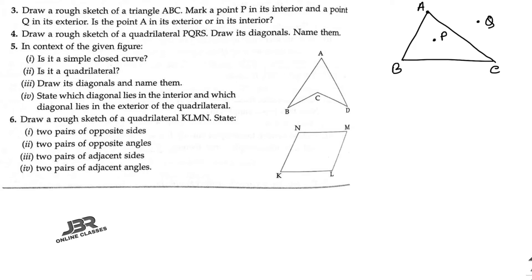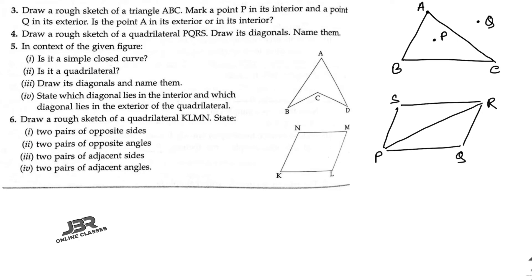Sum number four: draw a rough sketch of quadrilateral PQRS. Draw its diagonals. PR is the first diagonal and SQ is the second diagonal. So PR and SQ are the two diagonals of this quadrilateral.